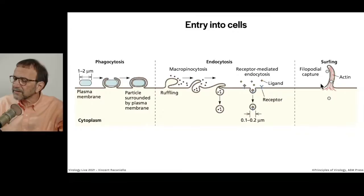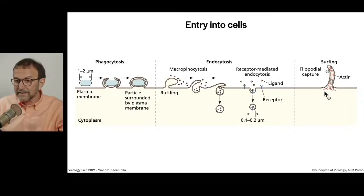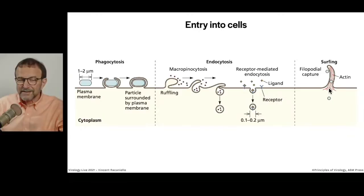Another mechanism is called surfing. Projections of the plasma membrane — filopodia — driven by actin microfilaments can capture materials. They then move down the projection by a process called surfing. Some viruses can be pulled into cells that way as well.